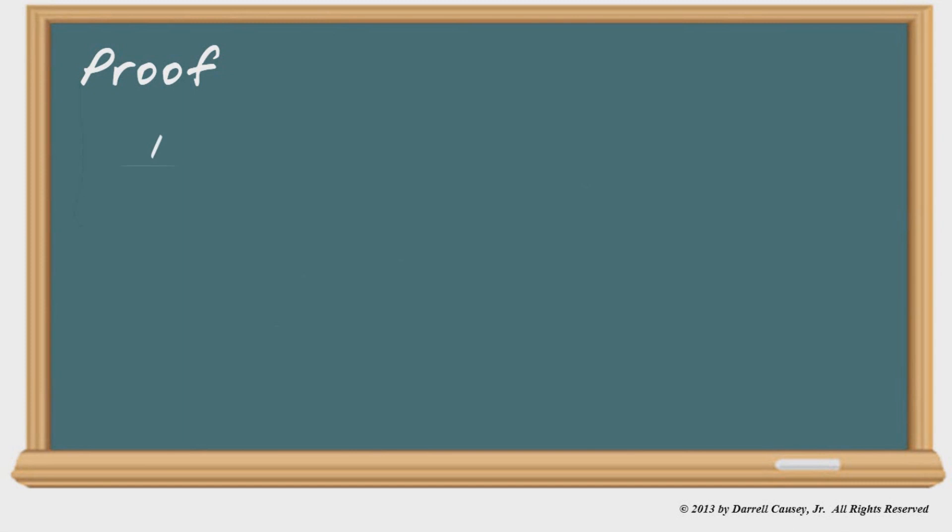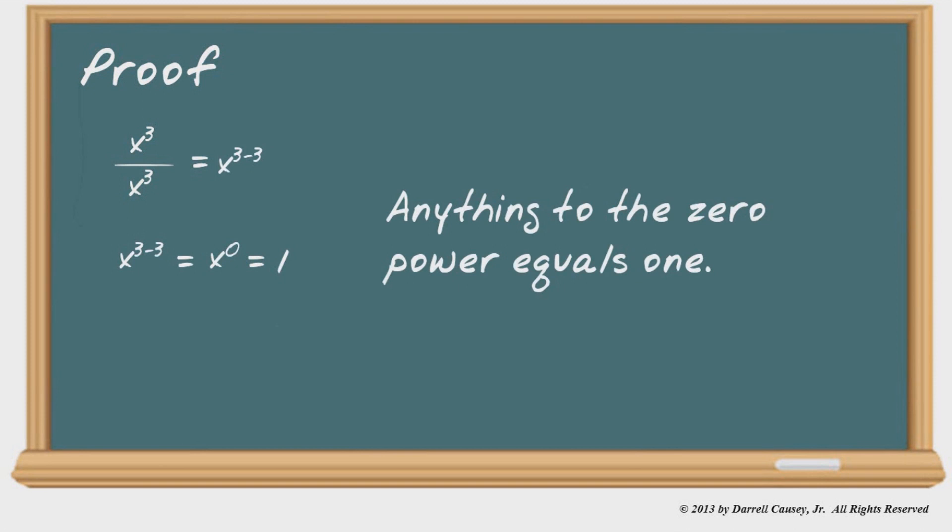Proof. I love this proof. 1 over 1 is 1. X over x is 1, and even a thousand over a thousand is 1. I think you get the idea. So x cubed over x cubed is 1. And so x to the three minus three is x to the zero. Therefore, it must be 1. Pretty easy, using the rules of substitution and reflexive. Anything to the zero power equals 1.